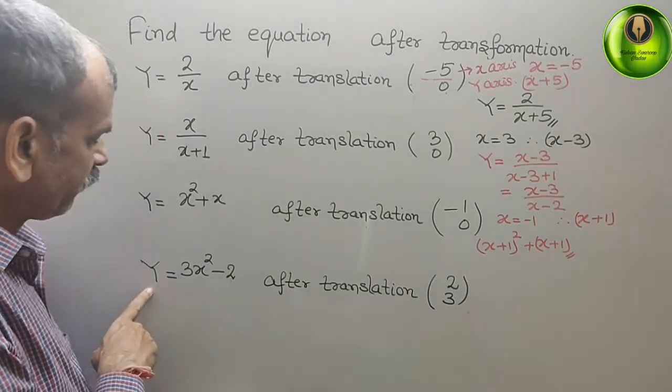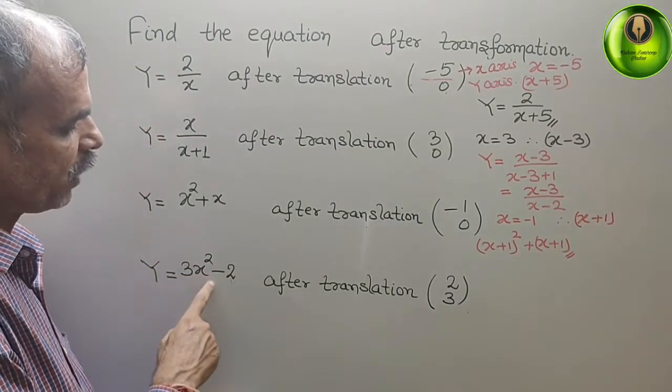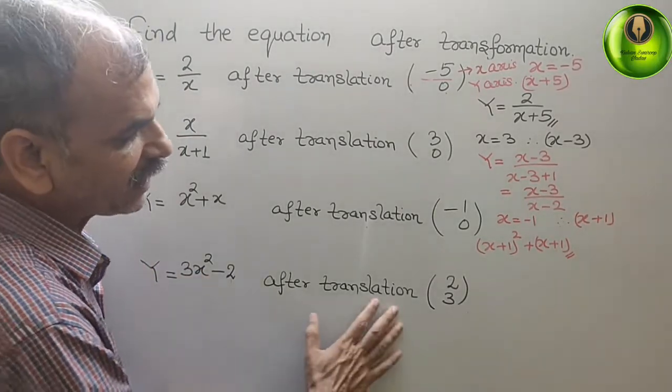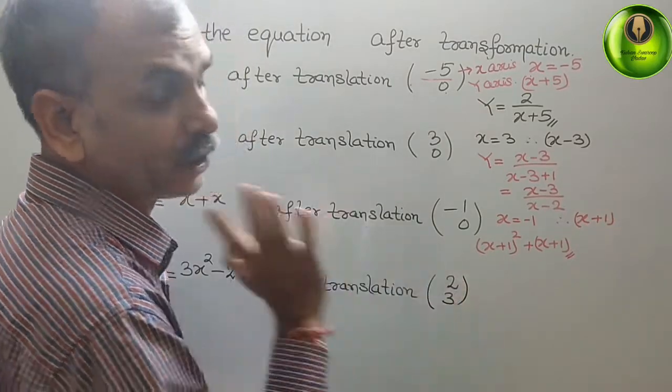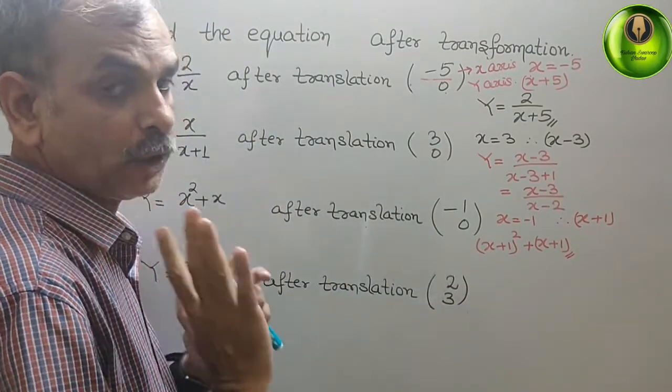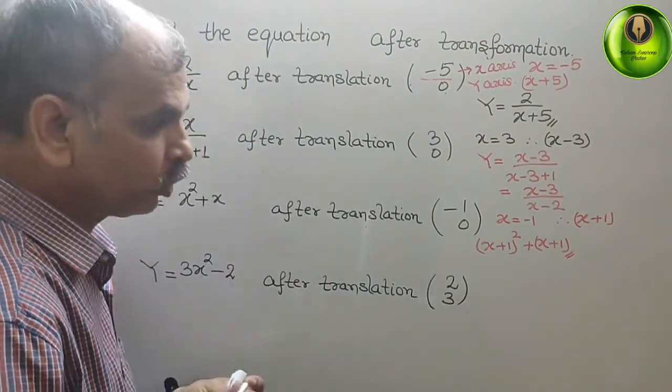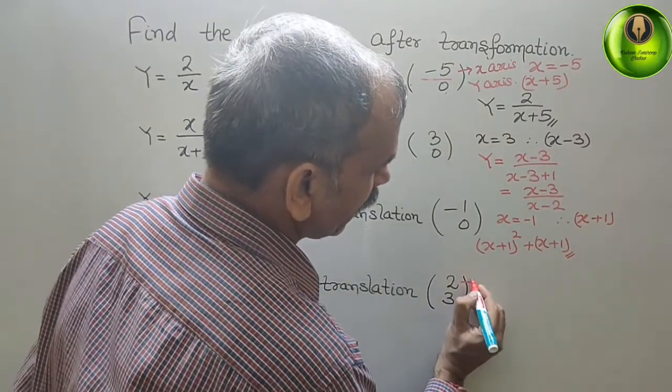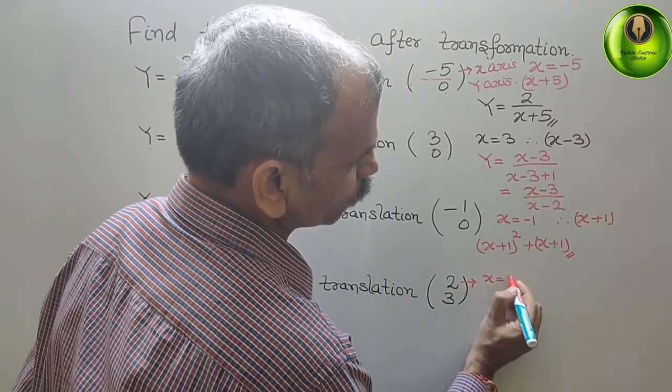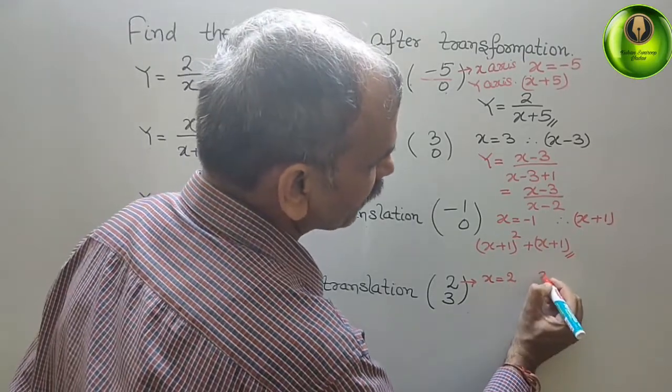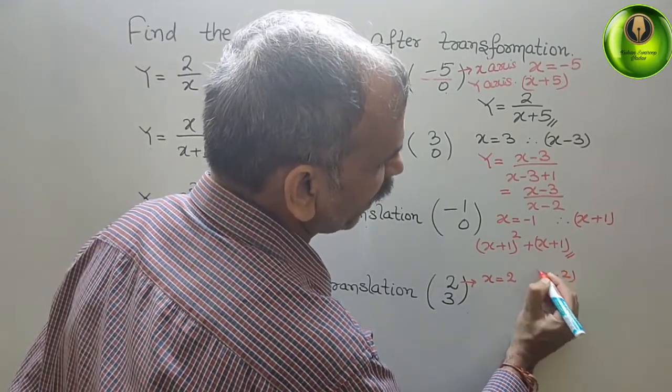Next. Here they have given y equals 3x squared minus 2. After translation, 2 and 3. Now we have to keep in mind. Here, in x-axis, is 2. So what is the factor for that? We can say x minus 2 is the factor.